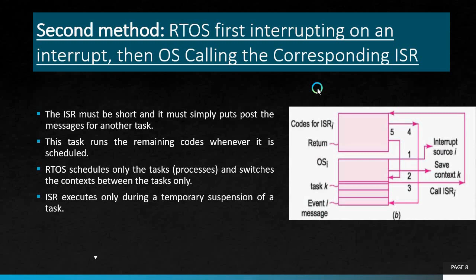After finishing the ISR, it will return back to complete the kth task. The ISR must be short and must simply post messages for other tasks. These tasks run the remaining code whenever scheduled. RTOS schedules only processes and switches context between tasks. The ISR executes only during a temporary suspension of a task. After completing the ISR, the temporarily suspended task again starts execution.